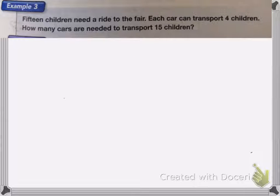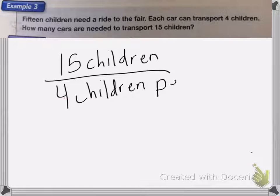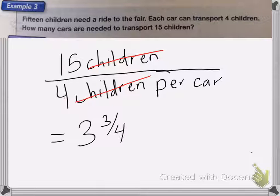In this problem, we have 15 children need a ride to the fair. Each car can transport four children. How many cars are needed to transport the 15 children? So we have 15 children, and I can put four children per car. So again, the children label cancels, so I end up with car for my final label. And I know that 15 fourths is the same as 3 and 3 fourths cars.